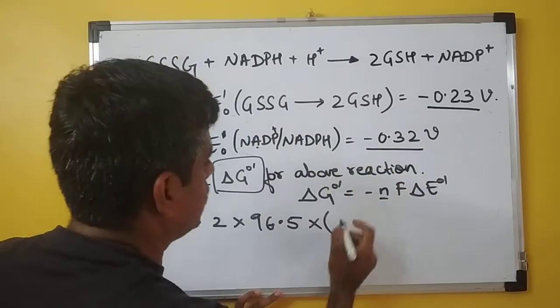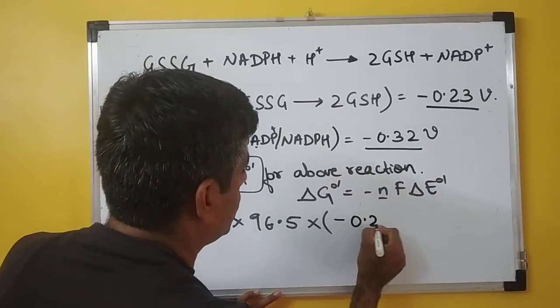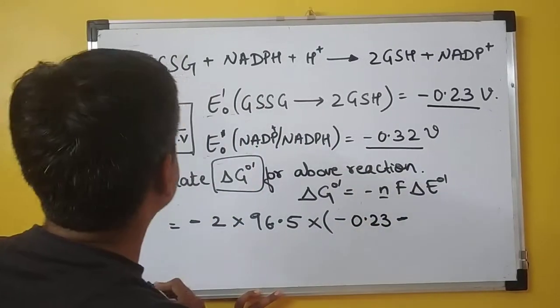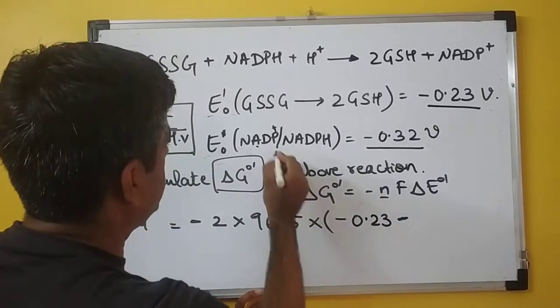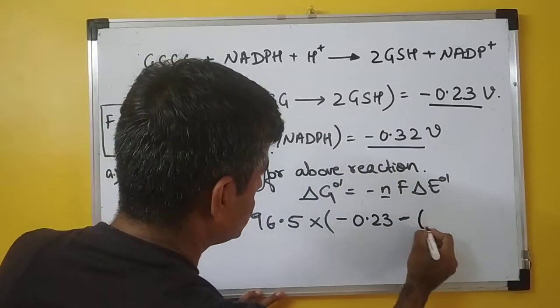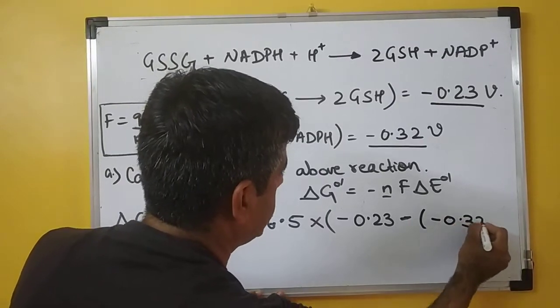So here the acceptor is glutathione, which we have as -0.23, minus that of the donor. The donor is NADP+/NADPH, and that value is -0.32.